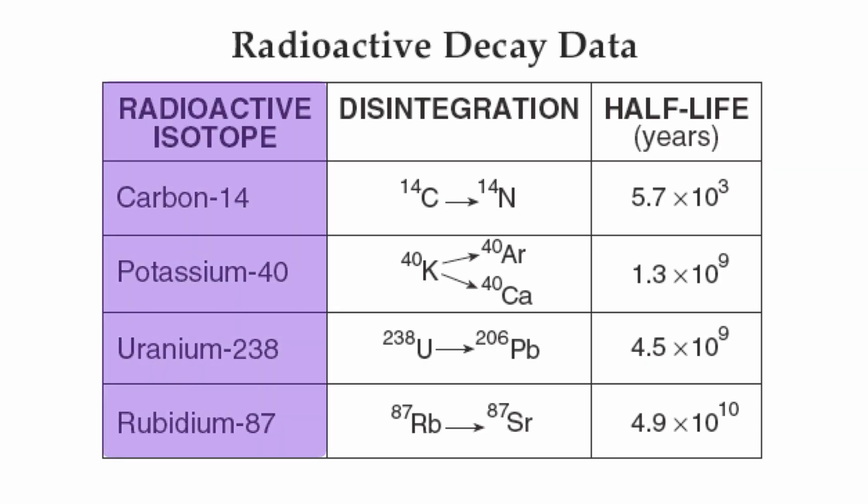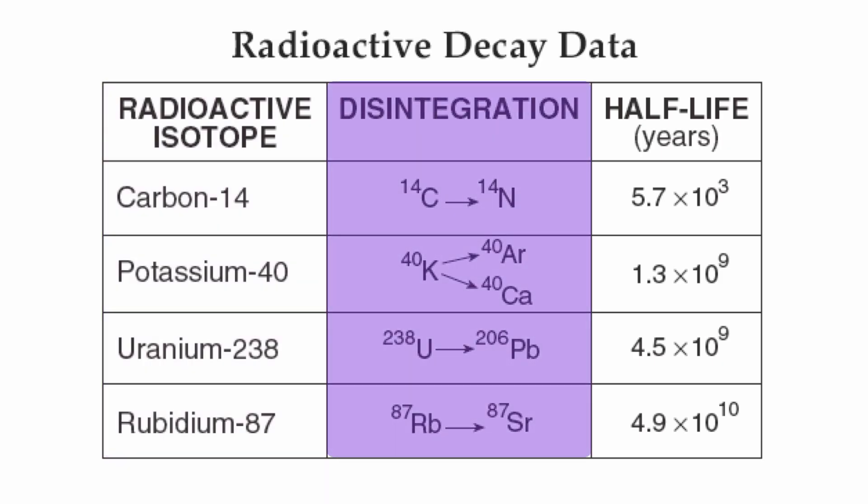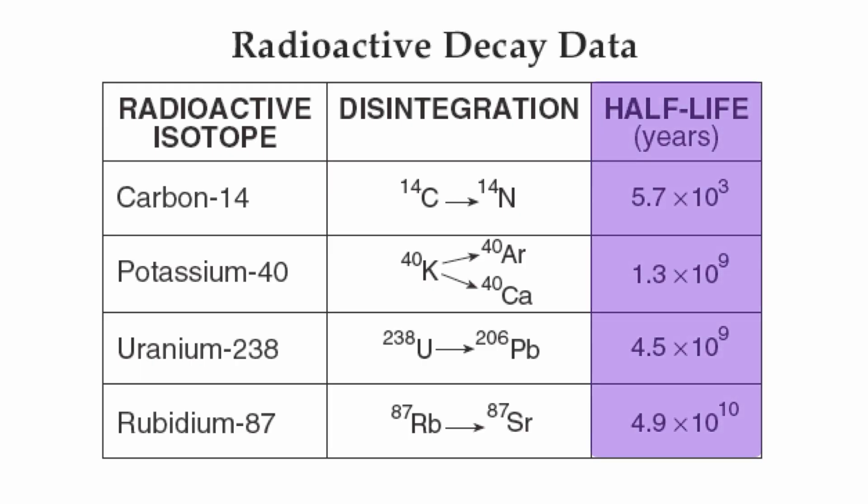So the first row on the left are your isotopes: carbon-14, potassium-40, uranium-238, and rubidium-87. The middle row is all about the daughter product, what these things are going to change into given enough time. And then finally the half-life, how many years it takes for half of your isotope to change into its decay product.